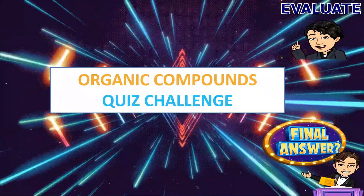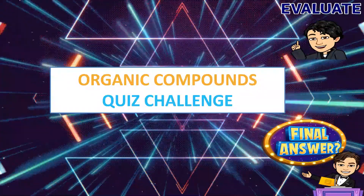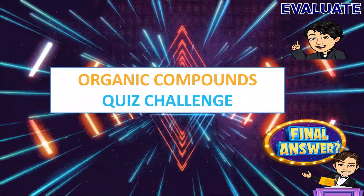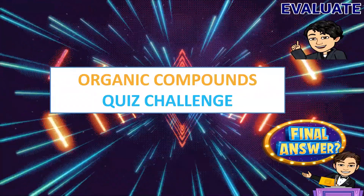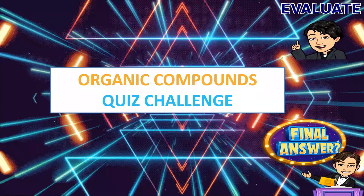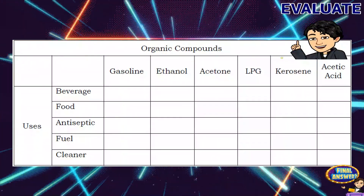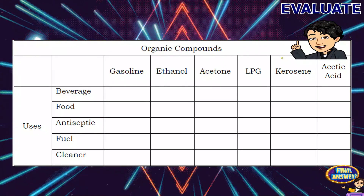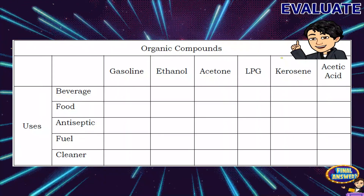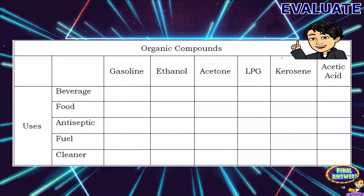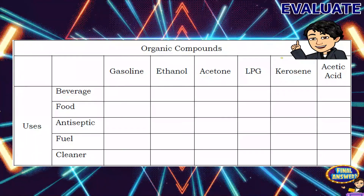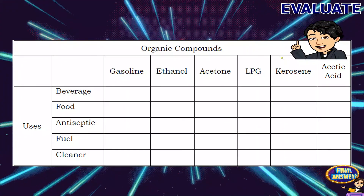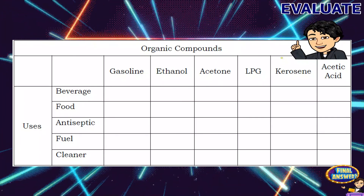Let's check how much you have learned from today's video with an organic compounds quiz challenge. You may pause the video while answering and press play when you're done to check your answer. Here are examples of organic compounds: gasoline, ethanol, acetone, LPG, kerosine, and acetic acid. Your goal is to identify whether each is used as a beverage, food, antiseptic, fuel, or cleaner.